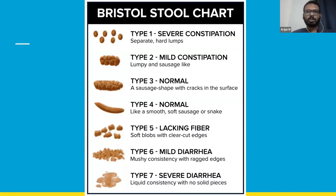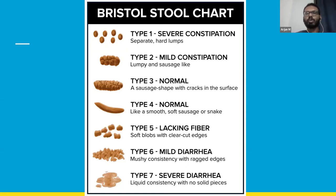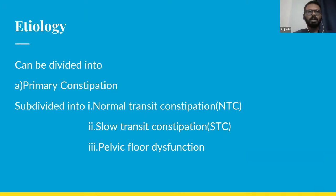The Bristol Stool Chart is one tool that most nurses and clinicians use in practice to assess bowel pattern. Types 3 and 4 are the normal bowel movements. Whenever a patient presents with constipation, it might be type 1 or type 2. We use this chart to assess their bowel pattern and educate them about aiming for a bowel movement of type 3 or type 4.